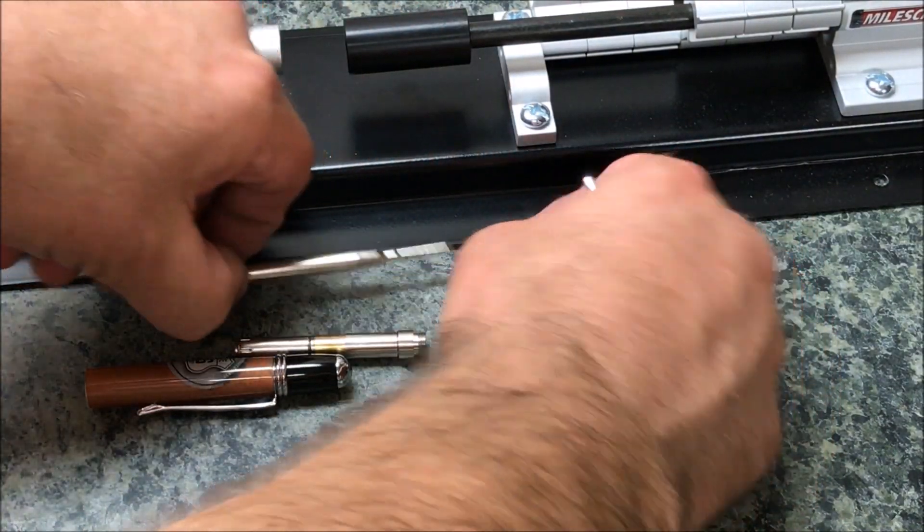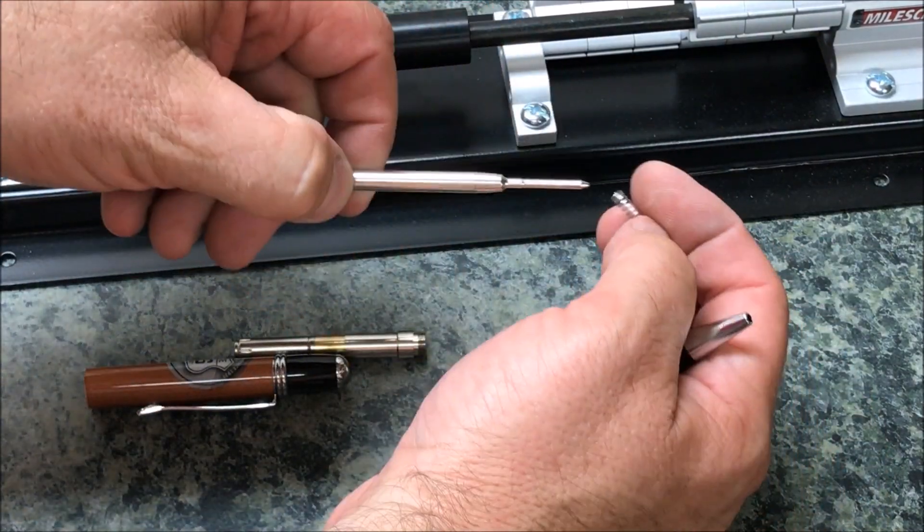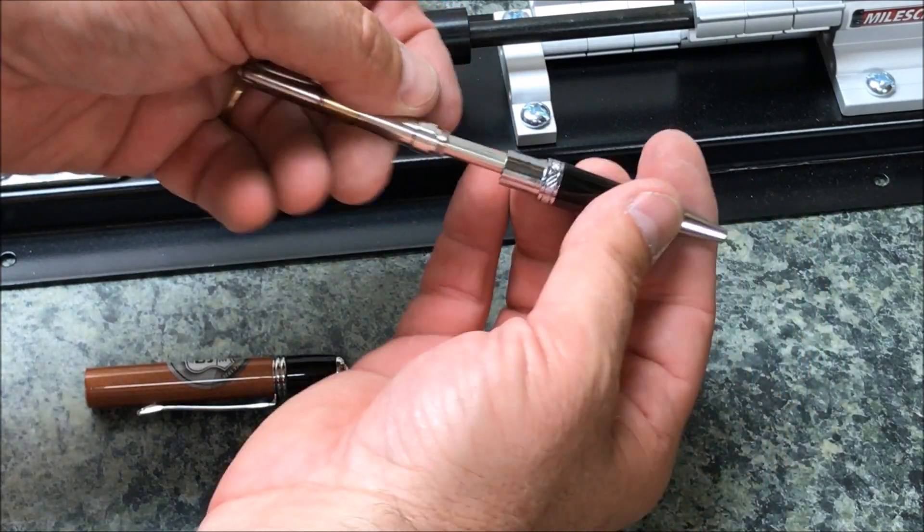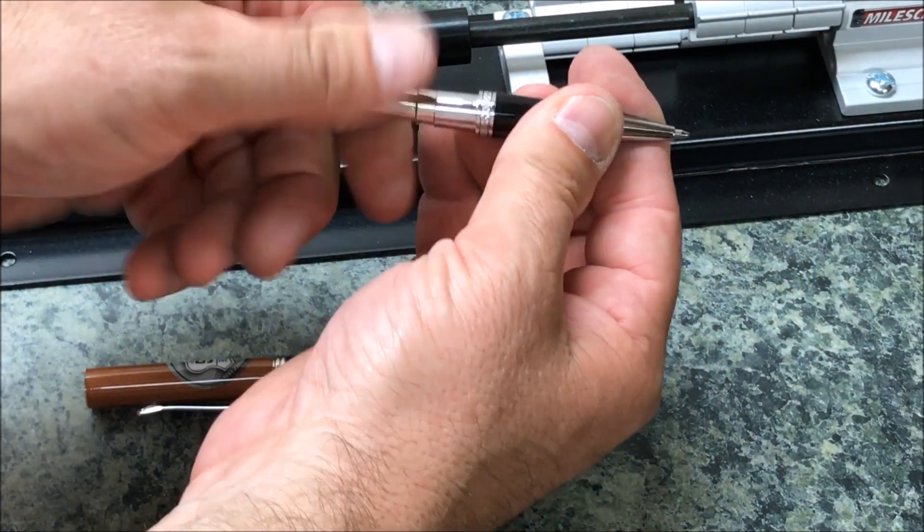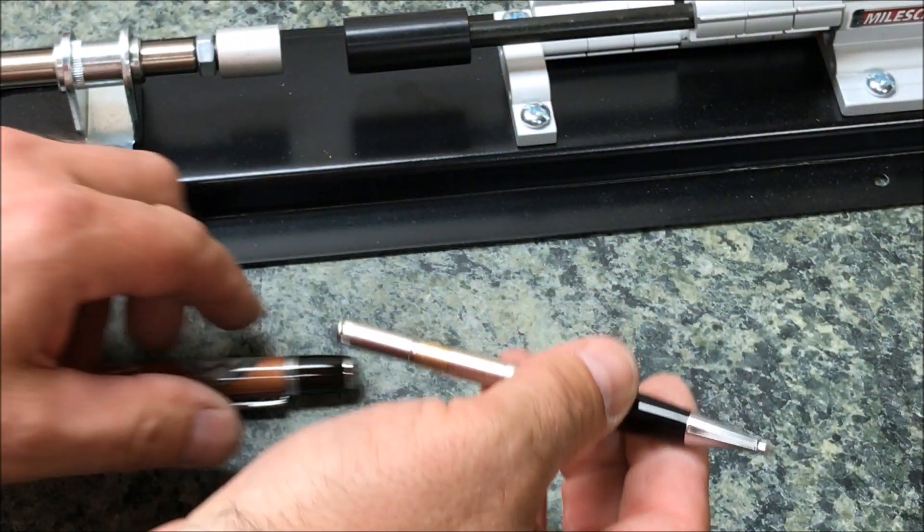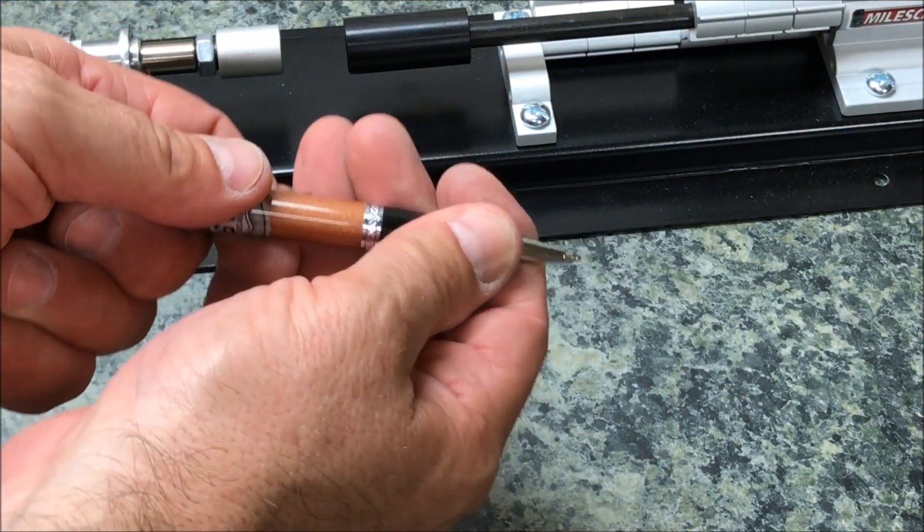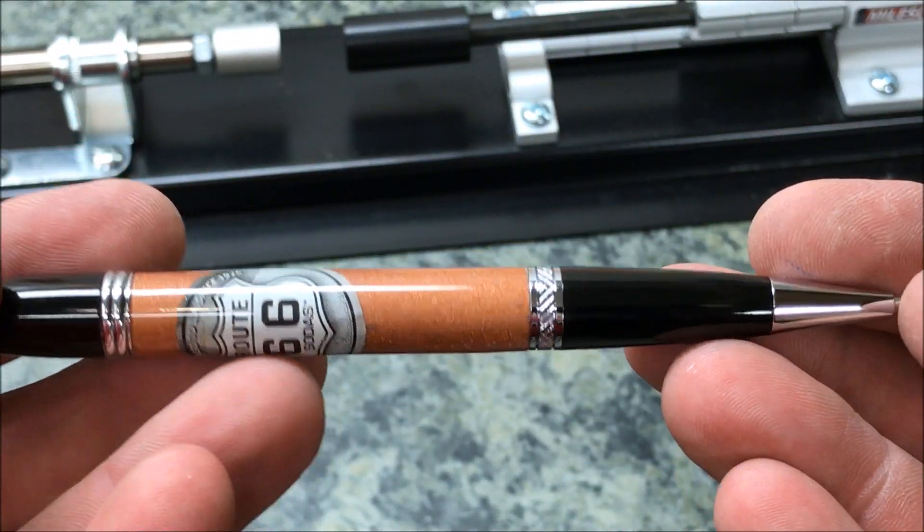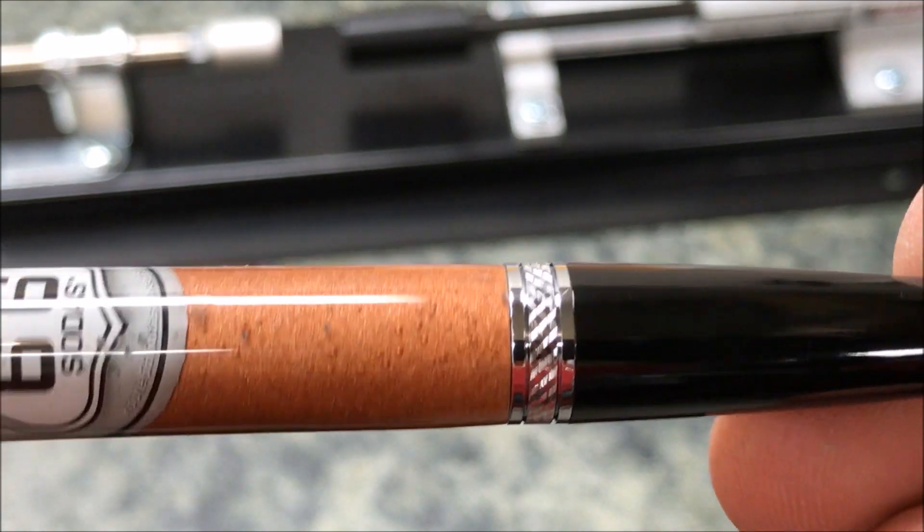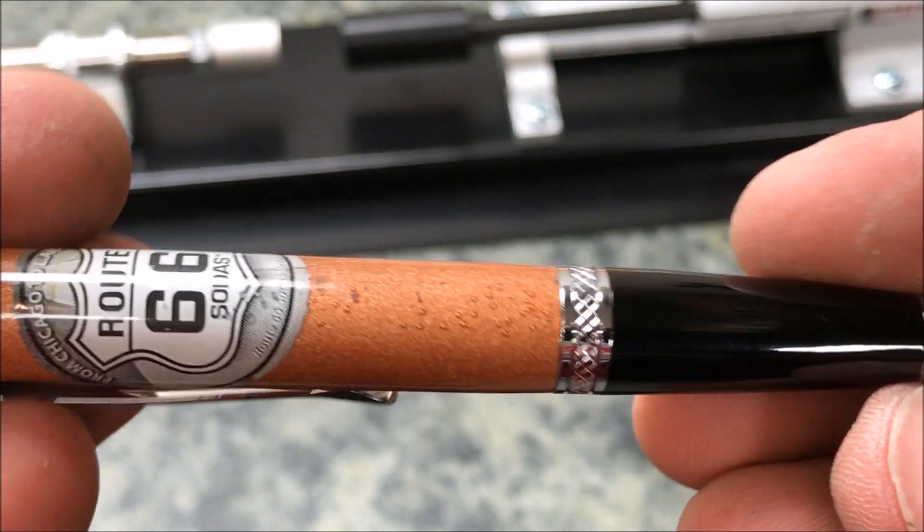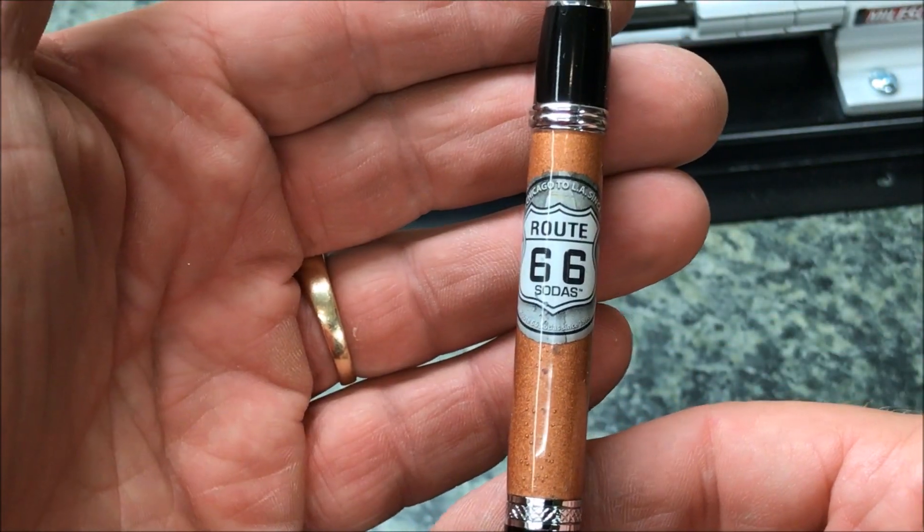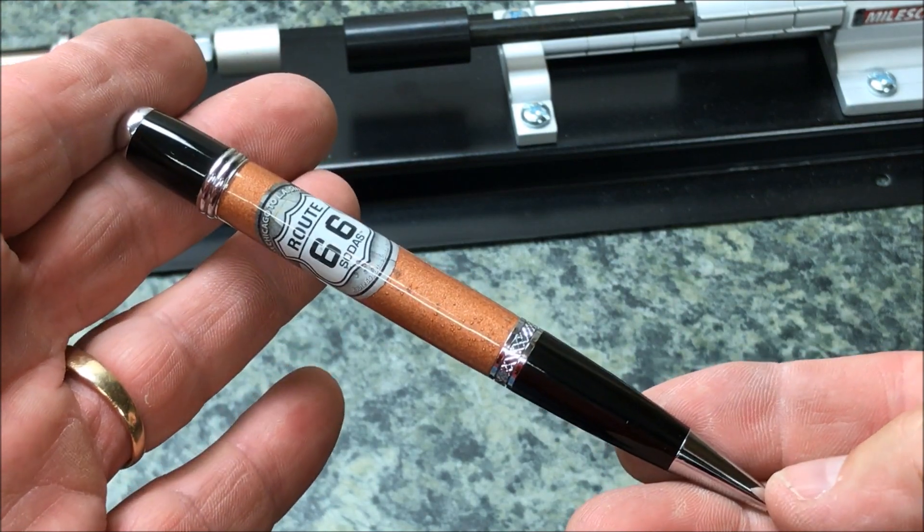This assembles just like the Manhattan. You take your ink refill, slide your spring onto it, put that into the nib, twist your transmission into place. Let's test the action - perfect. We'll slide this into the pen. And I am very happy. Take a look at the fit we got there - just a beautiful fit. See the bubbles? That turned out to be a pretty sweet looking pen. I like it.